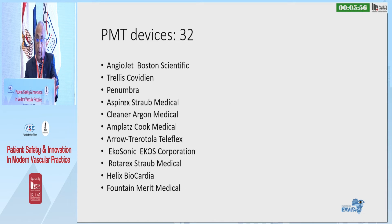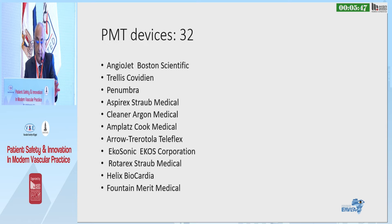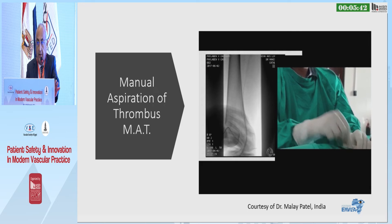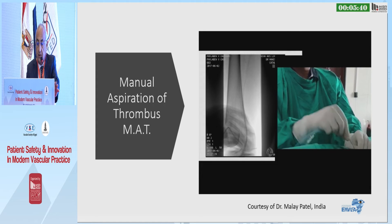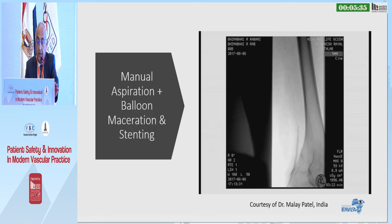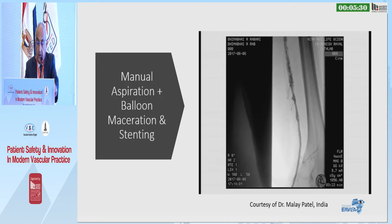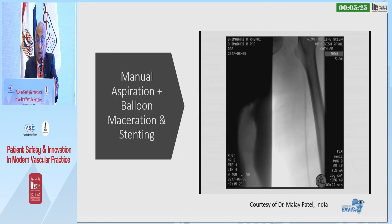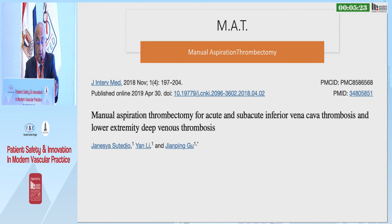There are 32 percutaneous mechanical devices available worldwide. The first is manual aspiration of thrombus — a very basic technique. You can see my colleague Malay Patel of India performing the procedure. On fluoroscopy, the catheter goes up and down through the thrombus, aspirating it, until the operator reaches the desired result.